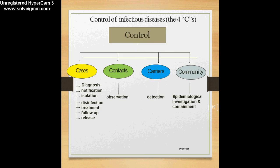To sum up control of infectious diseases, we need to understand the 4 C's in disease control. First is the cases. Second is the contacts — people who either take care of the cases or stay in close proximity, such as family members who share the same house or environment. Third is the carriers — people who apparently have no symptoms but carry the organism in their body. The last is the community at large.